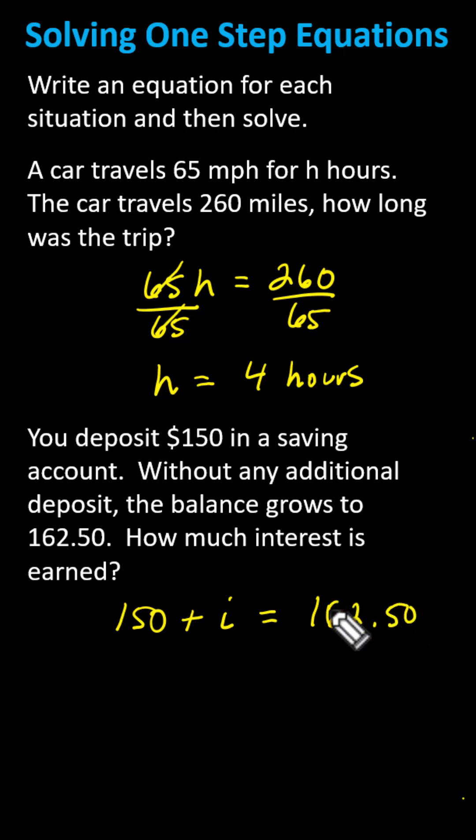Now to solve for i, we isolate i on the left side of the equation by subtracting 150 on both sides. On the right, because we have a decimal, we need to make sure we line up the corresponding place values. We can include a decimal point and zeros to the right.